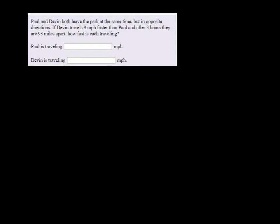I like to draw a picture of the scenario. They're both leaving from the same spot and we'll say that Paul goes to the right, Devin goes to the left. I'm drawing Devin's line a little longer because it says that he's traveling 9 miles per hour faster than Paul. But the total distance between them is 93 miles.